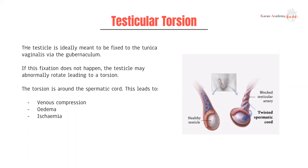Blocking the spermatic cord means you can't drain the testes anymore, which leads to venous compression. You can also have edema and ischemia. A question that comes up with these incarcerated pathologies — whether it's a torsion or a strangulated hernia — is why do we get edema if we're blocking both veins and arteries? It turns out the arterial system is a much higher pressure system, so blood can still reach the testicle but cannot leave, leading to compression, edema, and eventually ischemia.